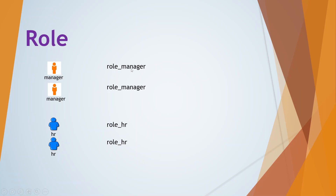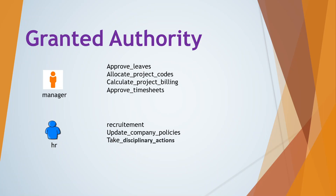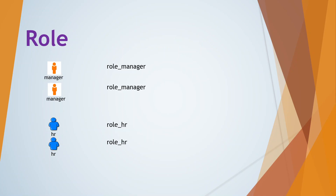If you allocate the Manager Role to a manager, he or she will be able to access all the authorities that are part of that role. So a Role is a container of authorities. It is a coarse-grained permission or coarse-grained access level, while GrantedAuthority is called a fine-grained authority.